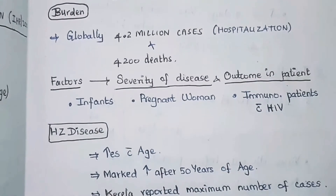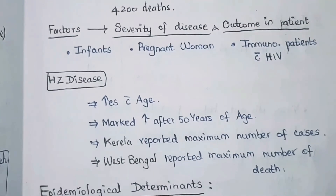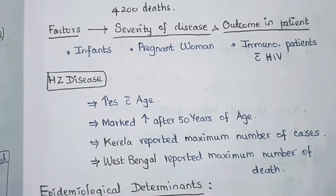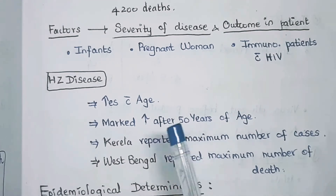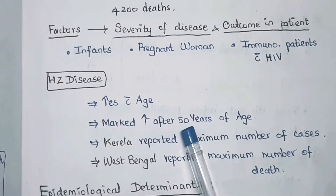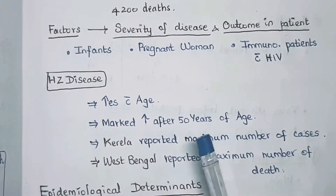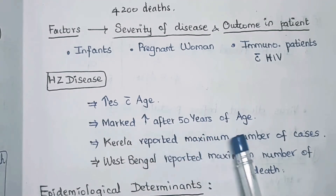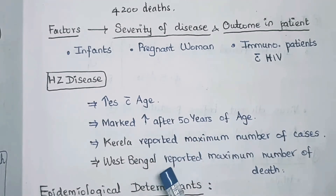Herpes zoster is a secondary infection. Its incidence markedly increases with age, especially after 50 years of age. In India, Kerala is reported with the maximum number of cases, whereas West Bengal is reported with the maximum number of deaths due to this disease.